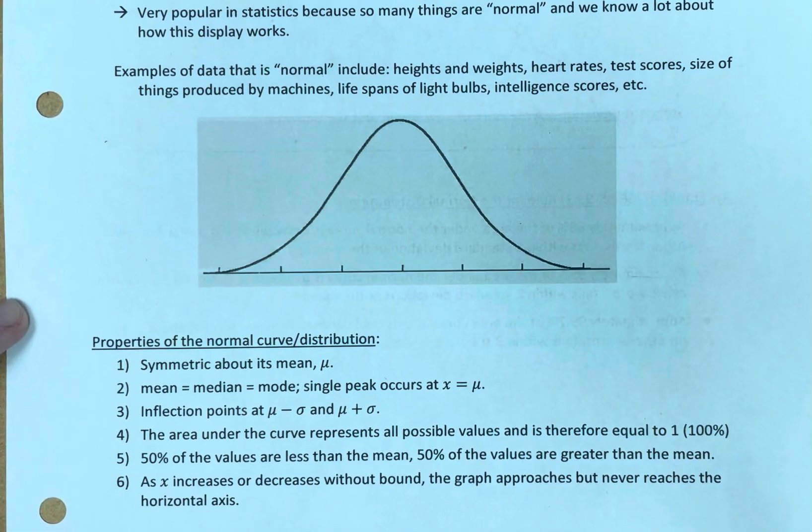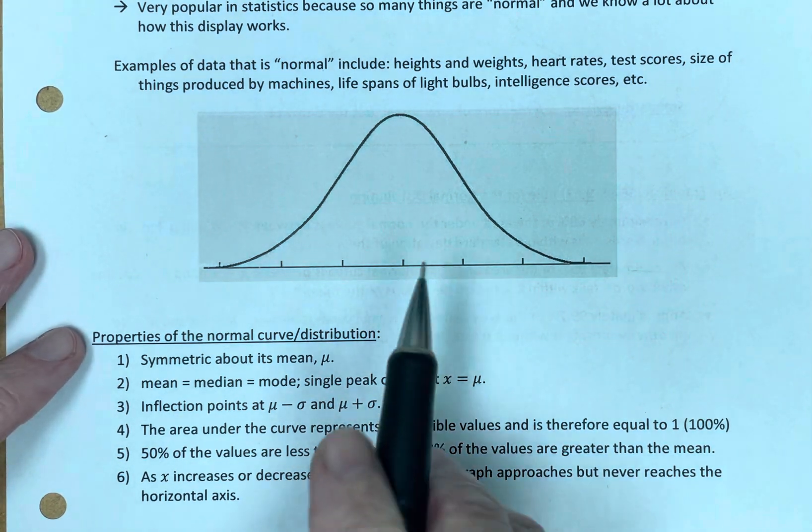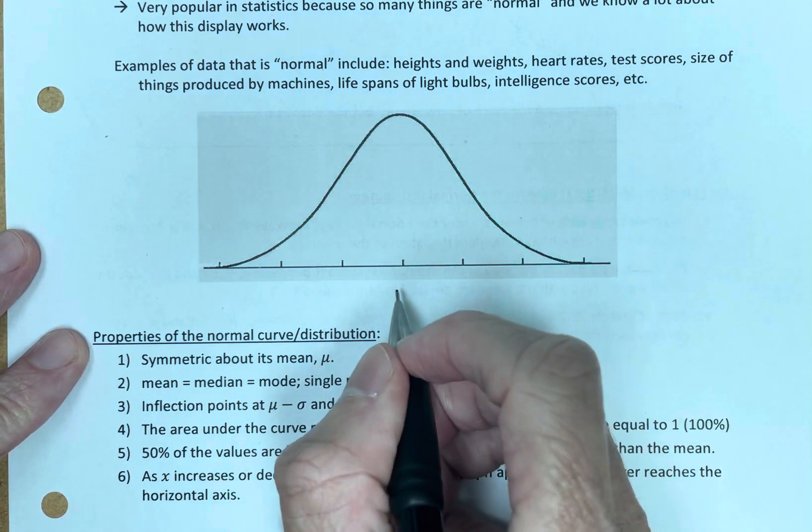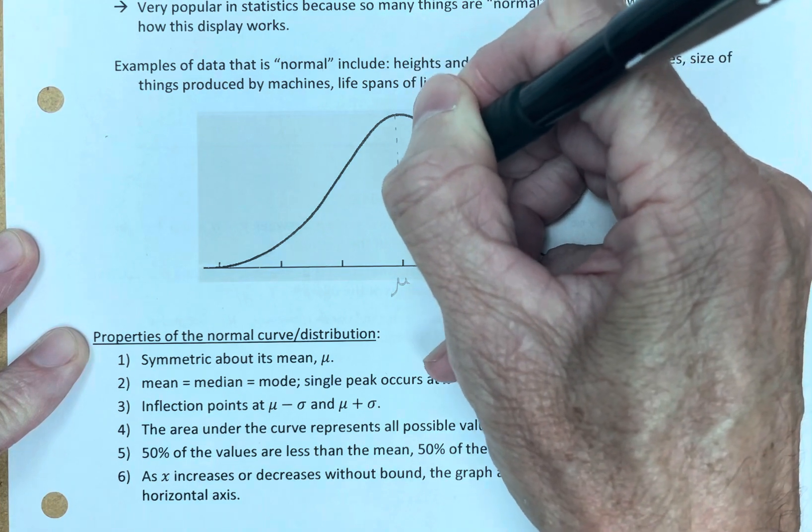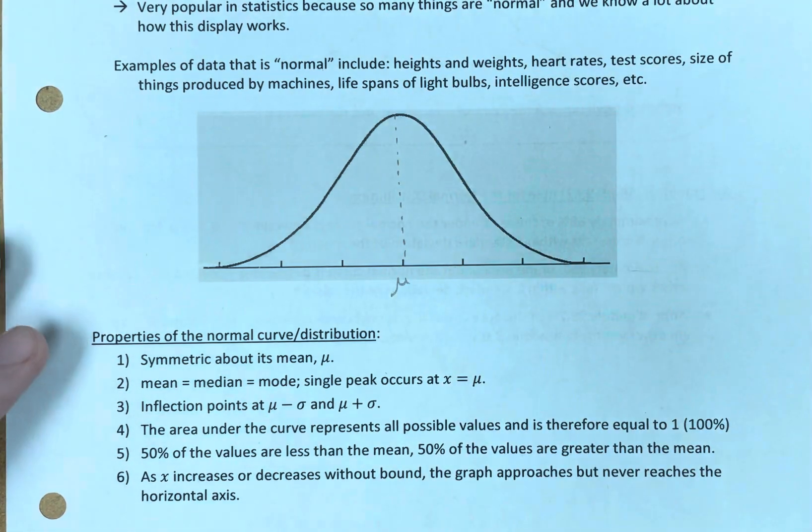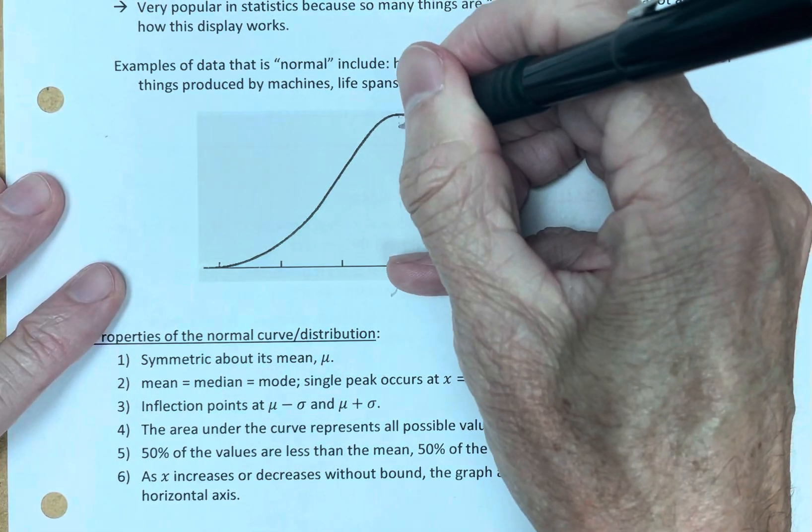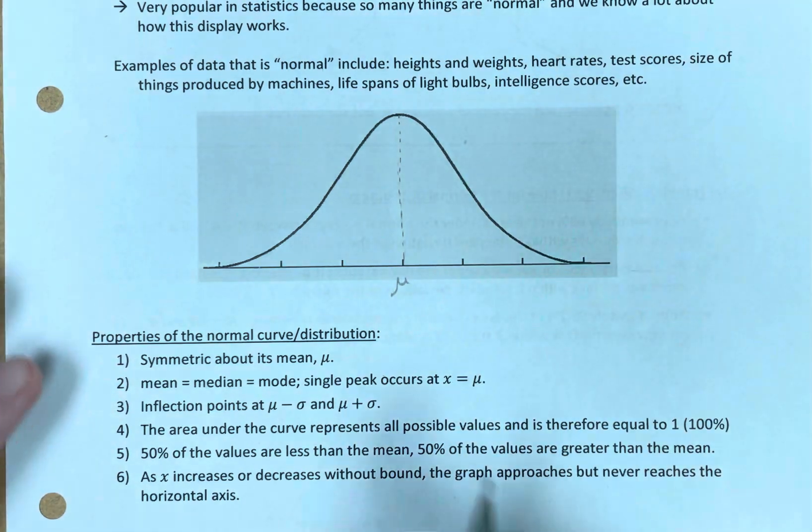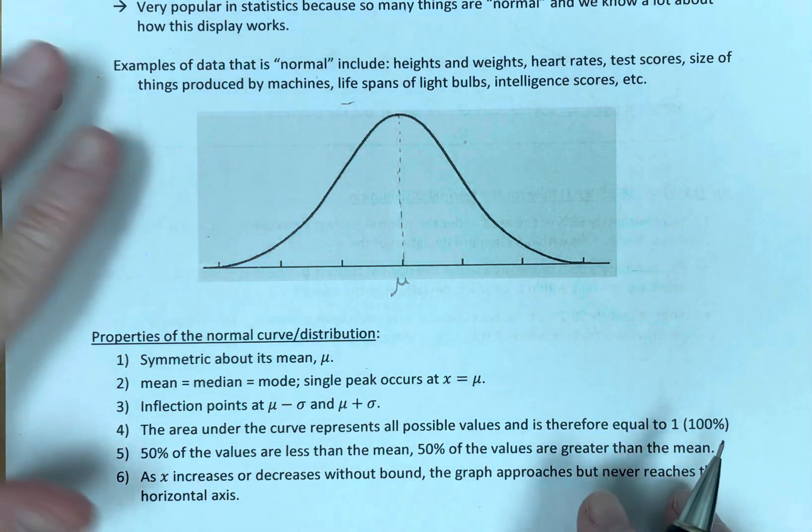What are properties? That was the objective for the video. What are the properties? A normal distribution is symmetric about its mean. Here's the mean. I'll draw the line down from above. There you go. Symmetrical. This side maps to that side. This side maps to that side.